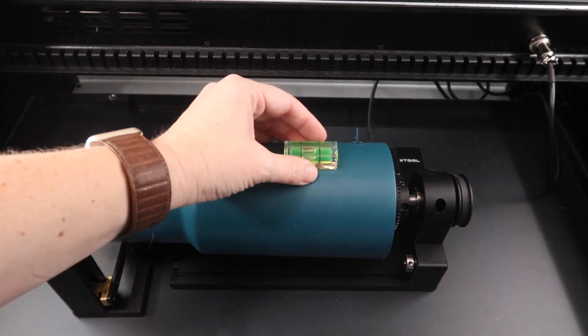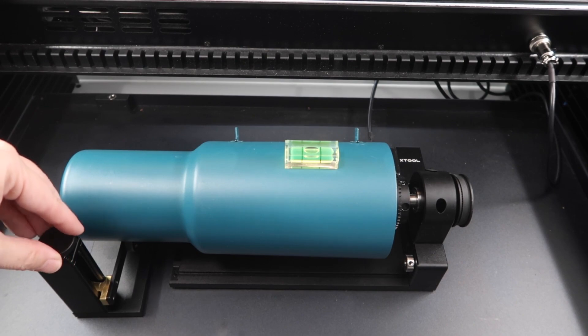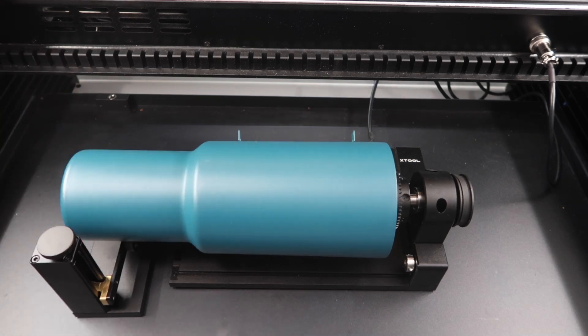Next, we want the surface that we're engraving on to be level. I'm using the support module under the end of the tumbler and I'm going to adjust it until the tilt is level. Now that the rotary is in the right spot inside the laser and the tumbler is level, let's find our starting position.